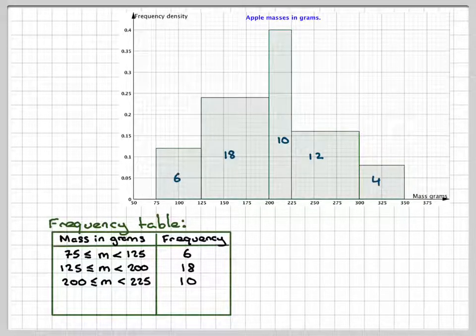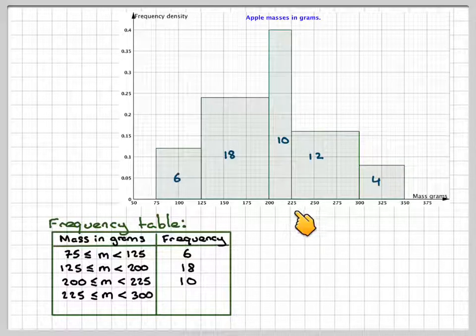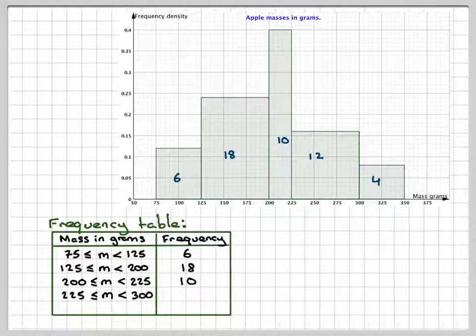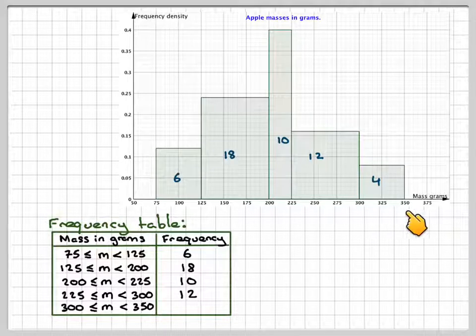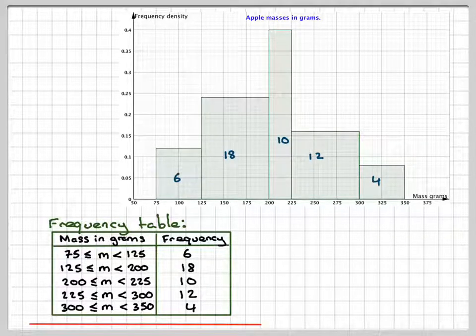And then 225 to 300 is represented by 12. And then 300 to 350 is going to be represented by 4.